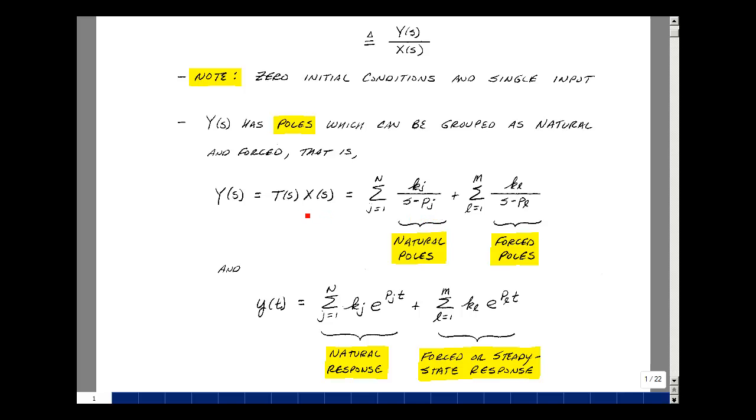The poles associated with X(s) will do the same thing. Suppose that there's m of those, and we'll go from l equals 1 to m, and we'll have our residue divided by s minus p sub l. We'll call these the natural poles and these the force poles.